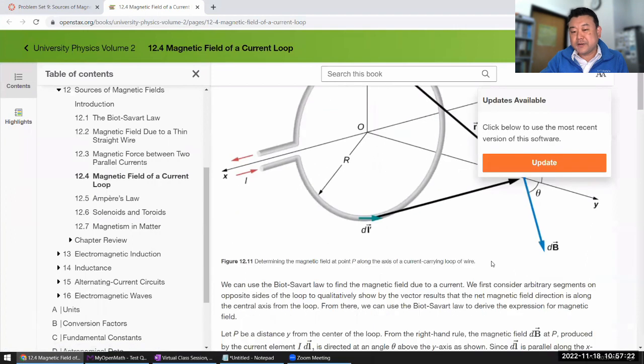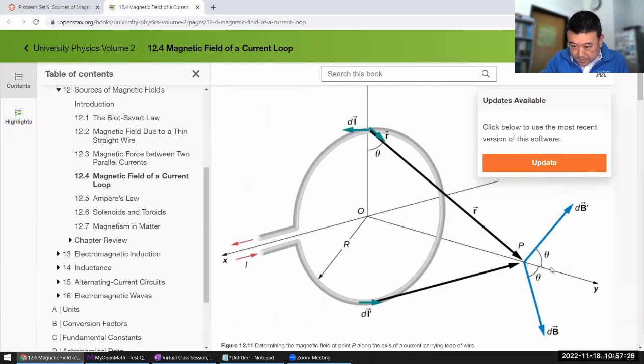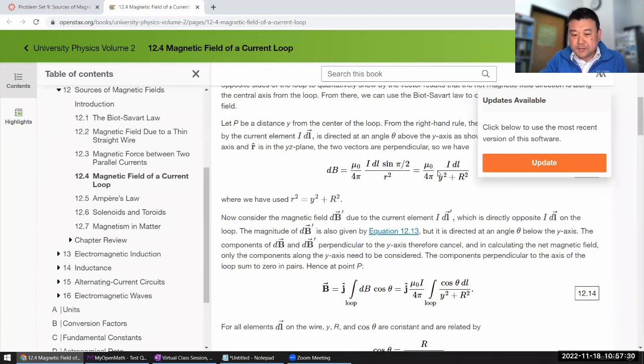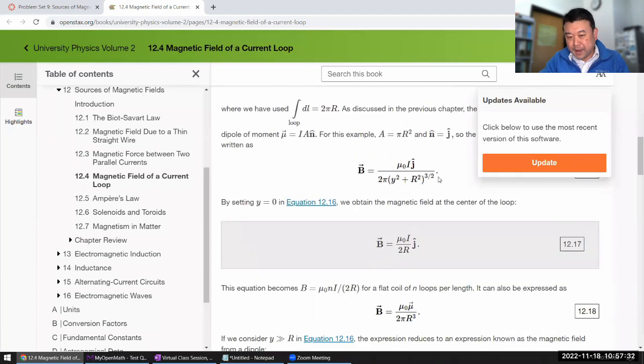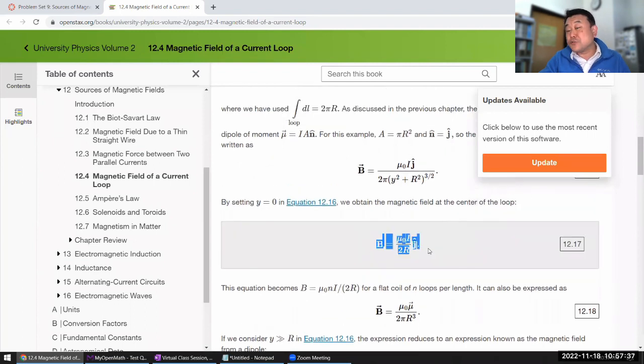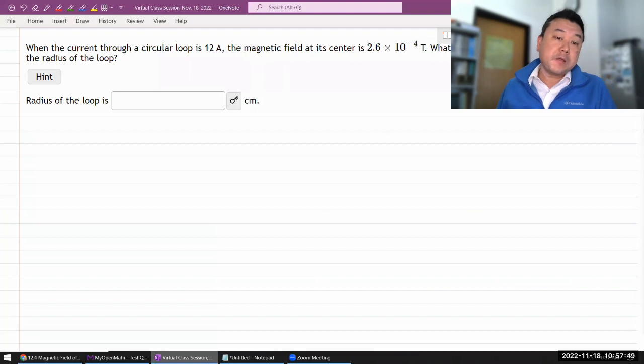Along this axis here, it goes through the whole pairwise cancellation of the component perpendicular, and it goes through all that. You could just use this formula. You are not prohibited from doing that, but I thought it would be good to just do the derivation from scratch to show utility of Biot-Savart's law.